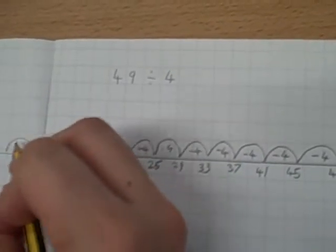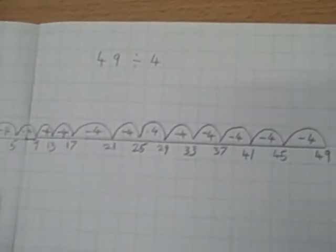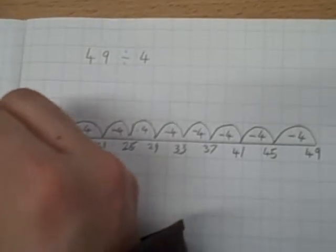Take away 4, gives us 1. You cannot take 4 away from 1, so that will be our remainder.